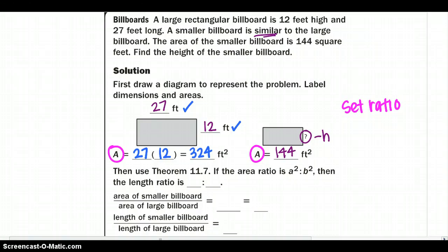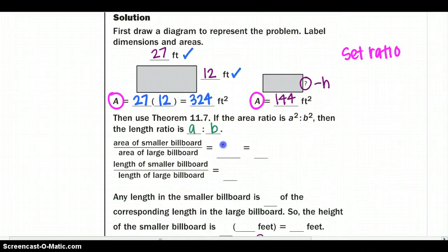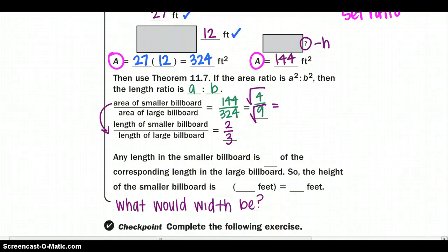Using theorem 11.7, the area ratio is A squared and B squared. So the length ratio would be A to B. So we need to kind of work backwards. The area would be 144 over 324, which reduces down to 4 ninths. Before we were going from the length to the area. Now we're going in reverse, so we need to square root both top and bottom to get our 2 thirds ratio to find our links.